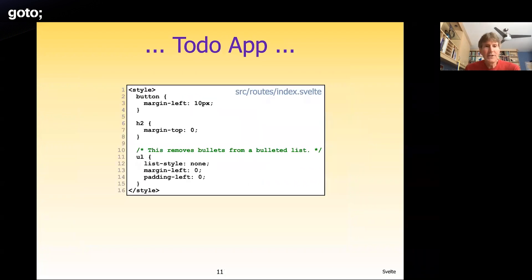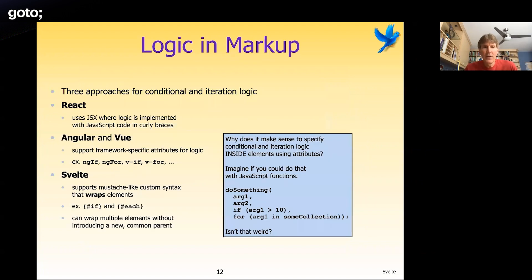The CSS section is straightforward — the main notable styling removes bullets from the unordered list items. That covers the whole todo app, demonstrating many Svelte features at once.